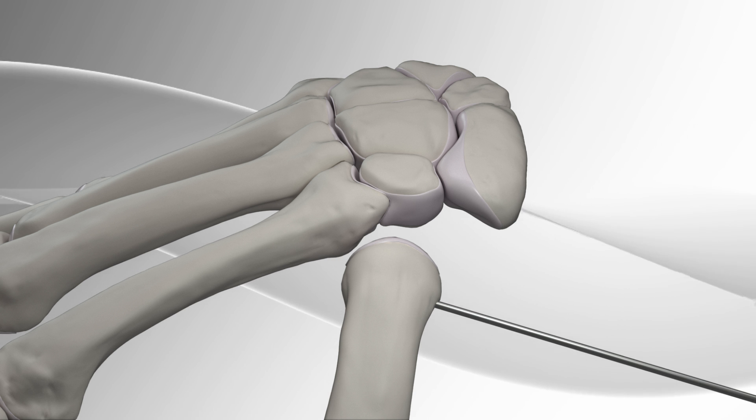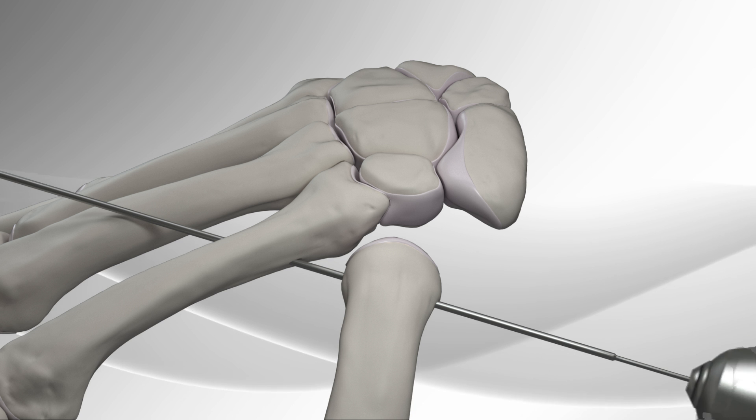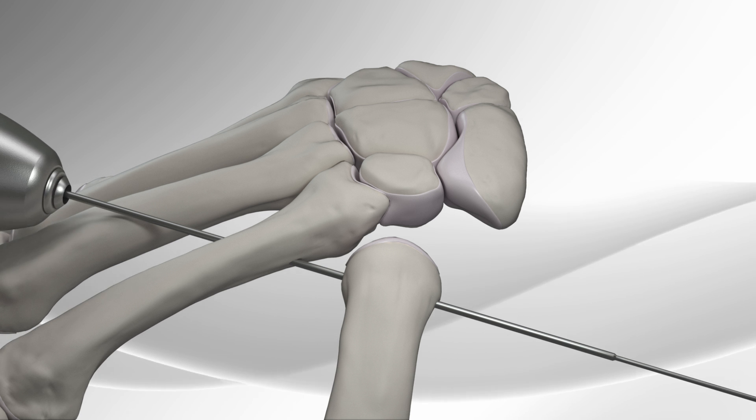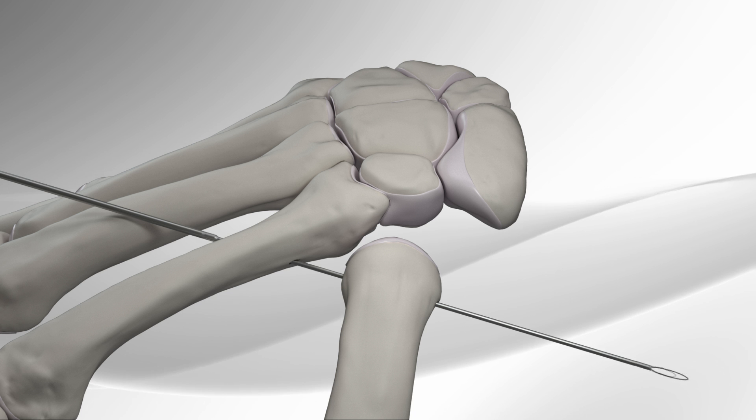A metal guide wire is driven under power from the thumb to the index finger. The guide wire has a metal loop in one end to allow the passage of the two strands of suture across both bones.